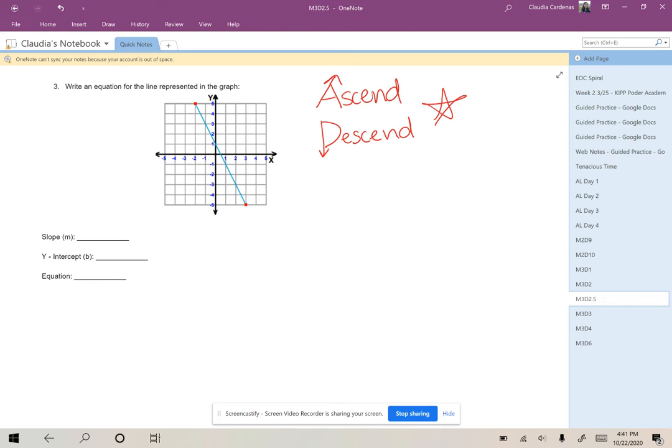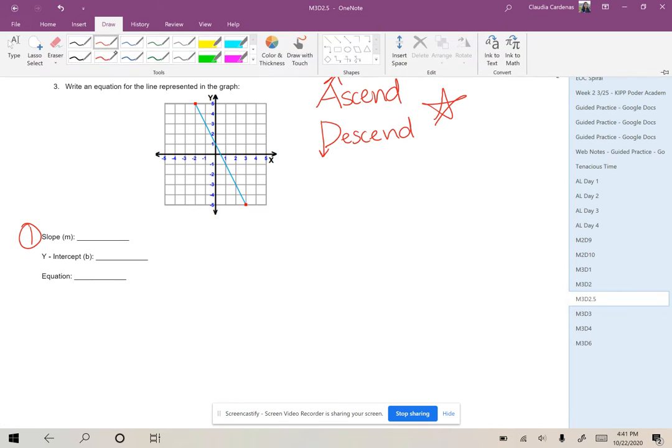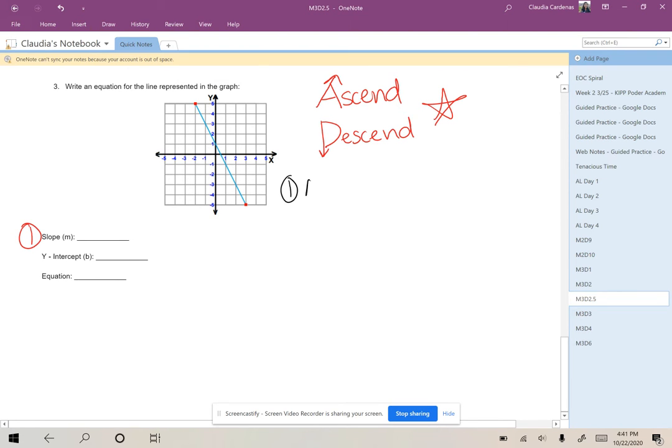So the process to find the rate of change is still the same, but I wonder what happens since our graph is descending. So let's take a look. I know that first we need to find our slope, and so in order to do that, I know we find the change in y over the change in x.